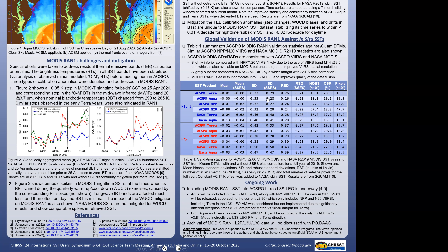Looking at the standard deviation for ACSPO Terra and Aqua, they are slightly higher than for VIIRS — about 0.01 to 0.02 K for nighttime. For daytime, it's about 0.42 versus 0.38 for VIIRS. So performance is slightly degraded compared to VIIRS, which is expected because VIIRS has an additional channel available — the 8.6 micron channel or M14 on VIIRS. This channel is present on MODIS but not usable for SST. That is what we attribute the better performance of VIIRS to.